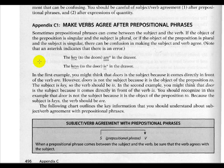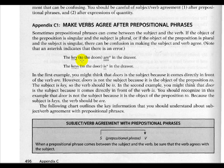Here we have an example: 'The key to the doors are in the drawer.' The asterisk indicates this is not correct. In this case, key is singular but the prepositional phrase — to the doors — is plural. 'Are' is not correct; it should be 'The key to the doors is in the drawer,' because 'is' is the singular verb and key is singular.